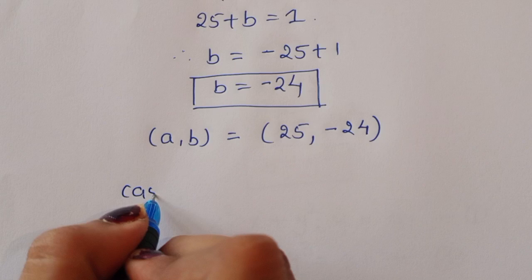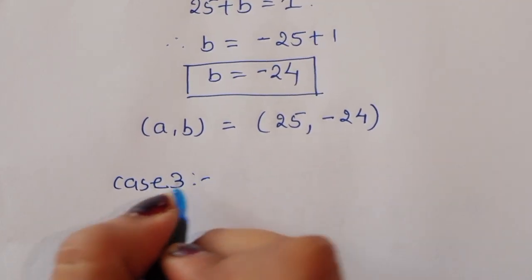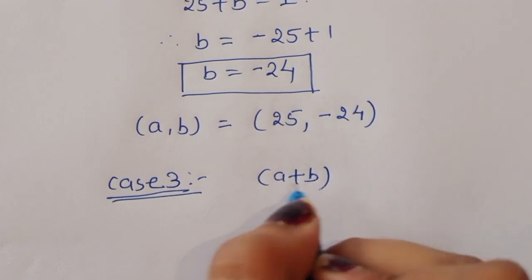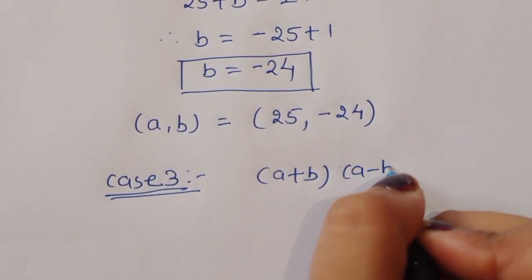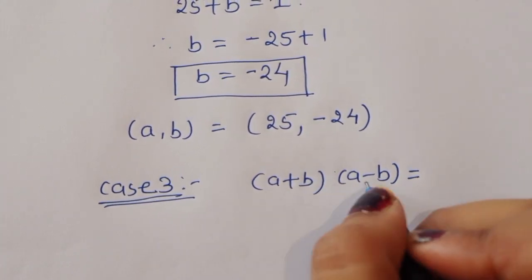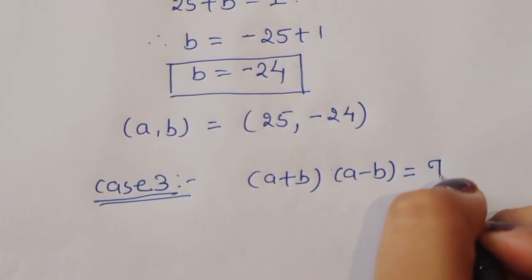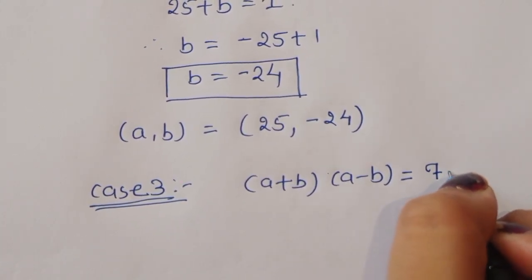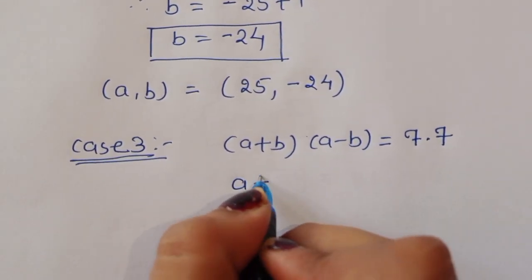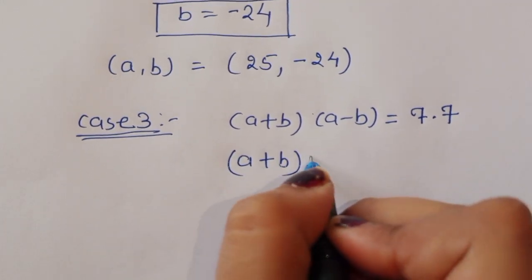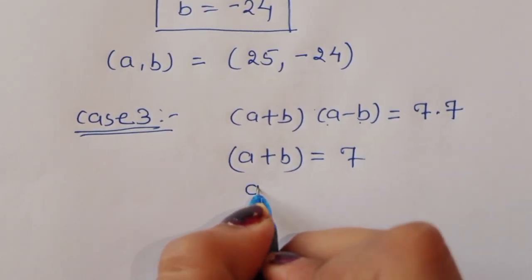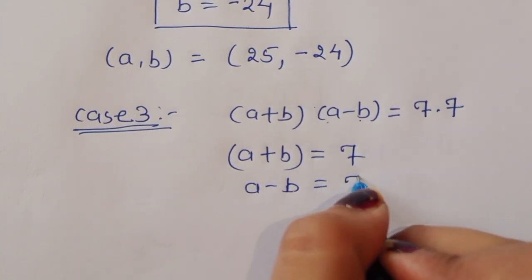Case 3: (a + b)(a - b) = 7 × 7. Comparing terms, a + b = 7 and a - b = 7. Adding these equations, 2a = 14, therefore a = 7.